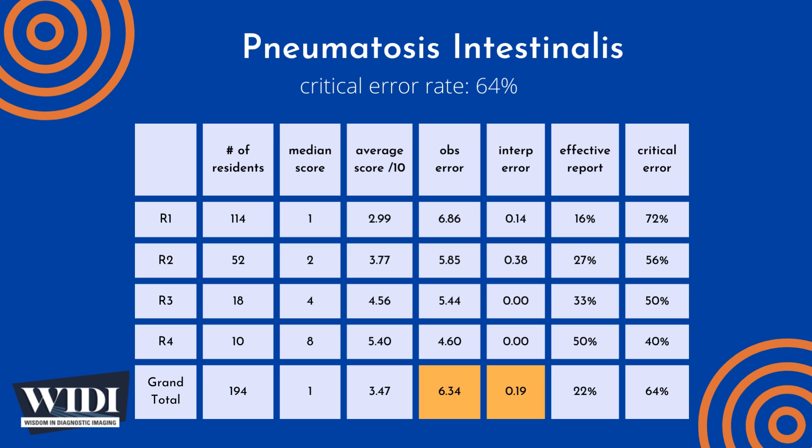We define an effective report to be one which achieves scores between 7 and 10 — in terms of letter grades, this would be an A or a B. In this most missed case, 22% of residents produced effective reports.